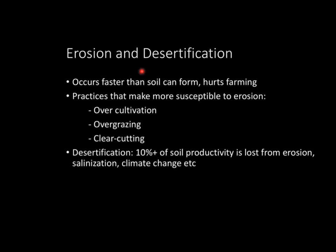Now let's look at erosion. Erosion occurs faster than soil can form, thus hurting farming. Erosion is a very natural process, but when it starts to hurt farming is when soil erodes too quickly and new soil can't form, because soil takes a long time to form. There's then a lack of topsoil, which hurts farming. There are a couple of practices that make certain soils more susceptible to erosion, such as over-cultivation, over-grazing, or clear-cutting.